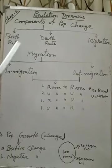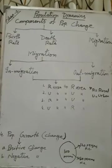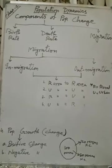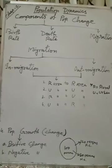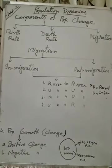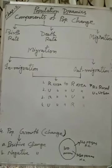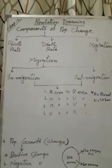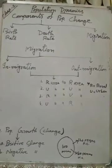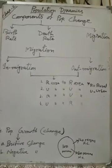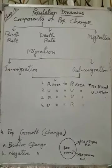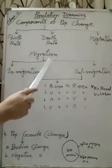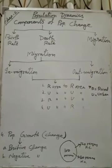Birth rate means the number of live births per thousand people in a year. And death rate refers to the number of deaths per thousand people in a year. Migration means the movement of people from one place to another.